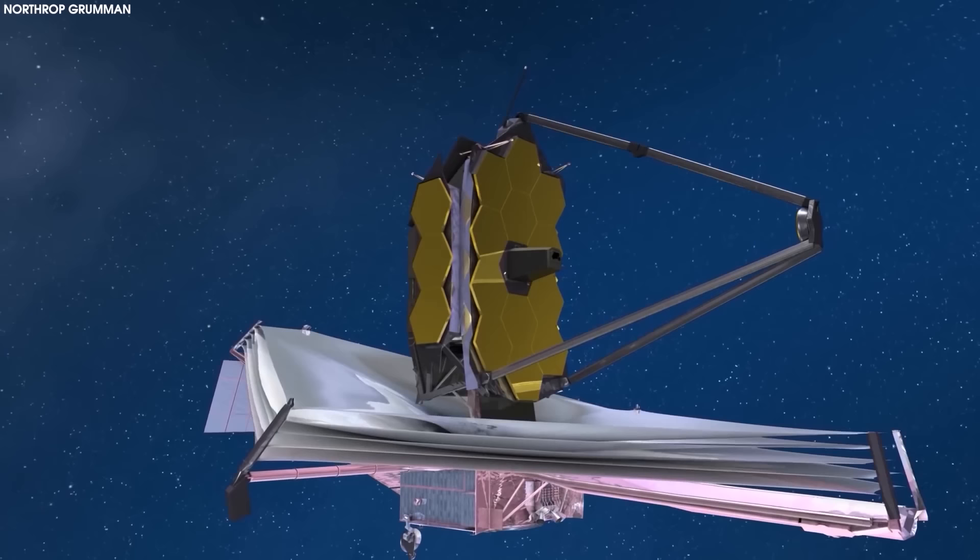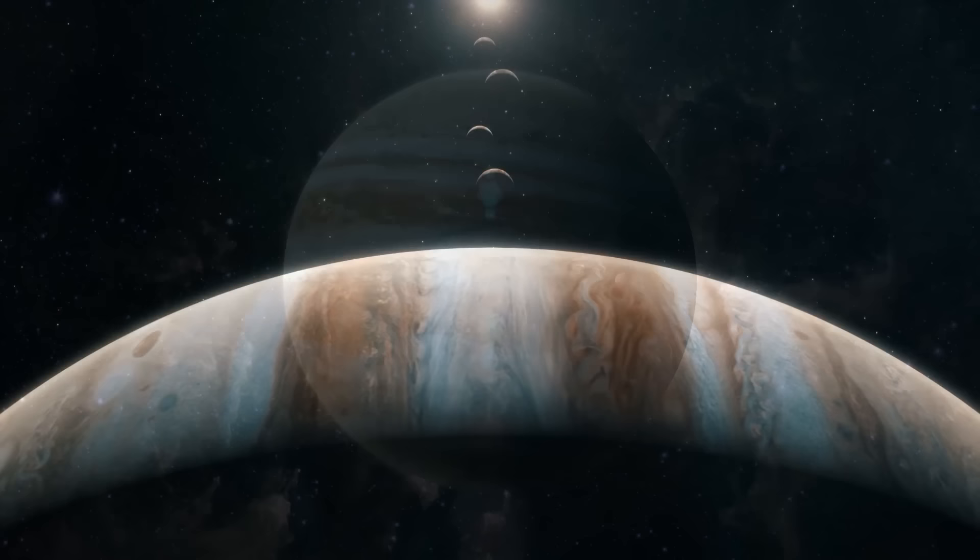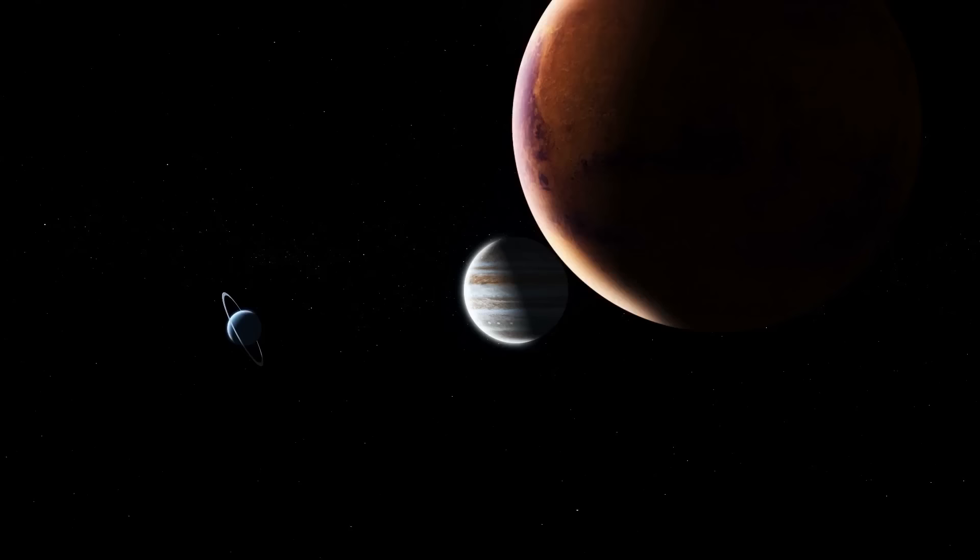This will consist of Kanodia and his team using Webb's near-infrared spectrometer, or NIRSpec, to observe short-period Jupiter-sized planets around red dwarfs, which pose challenges to current theories about planet formation and represent an extreme regime that is poorly understood.